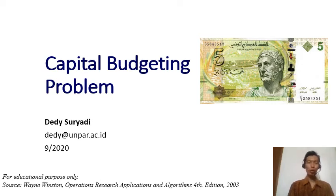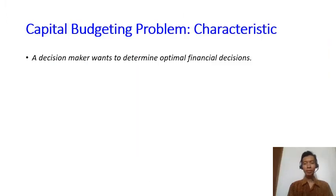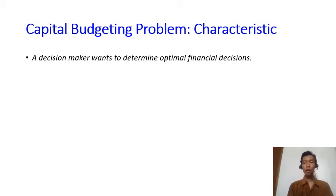In this section, I'm going to talk about the capital budgeting problem, which is another typical problem that people model into a linear programming. In this problem, a decision maker wants to make decisions such that his or her financial situation becomes optimal.